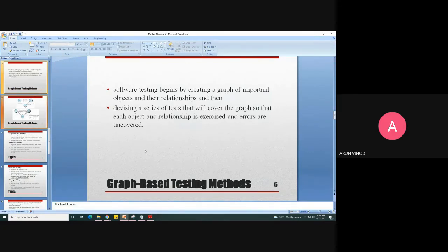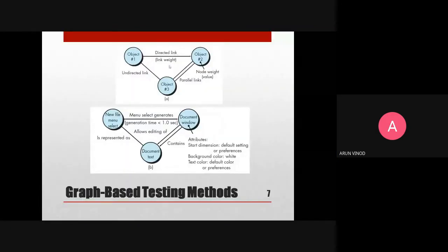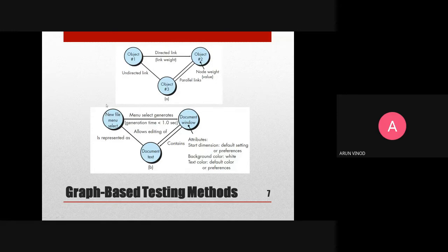Here in the formal example, object 1, object 2, and object 3 are all nodes. There is a directed link (uni-directional from object 1 to object 2), a parallel link (multiple links between object 2 and object 3), and an undirected link (a link between object 1 and object 2 with no direction). This example uses a Microsoft Word document to explain graph-based testing.